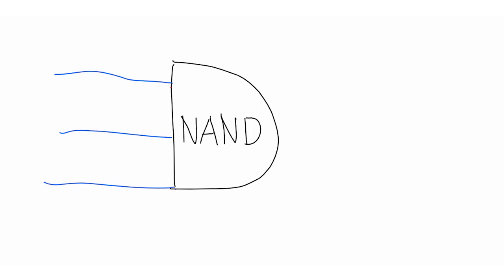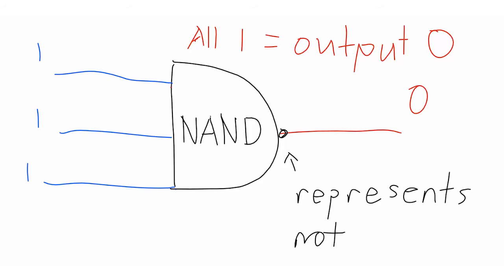The NAND gate is the opposite of an AND gate. If all inputs are 1, it will return 0 instead of 1.